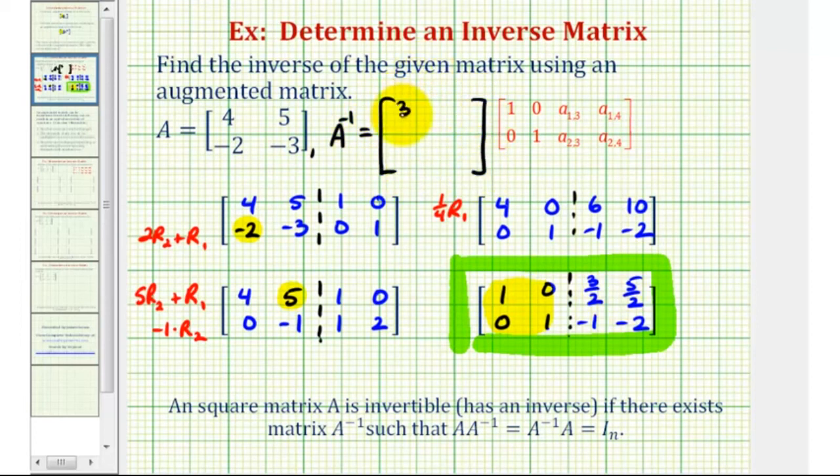So the first row would be 3 halves, 5 halves. And the second row would be negative 1, negative 2.